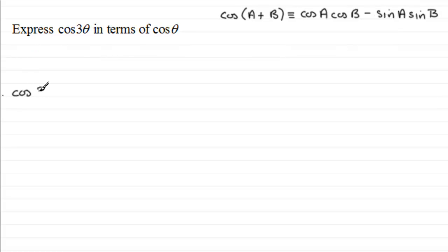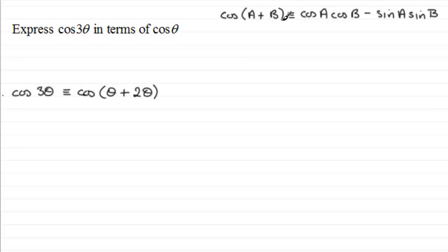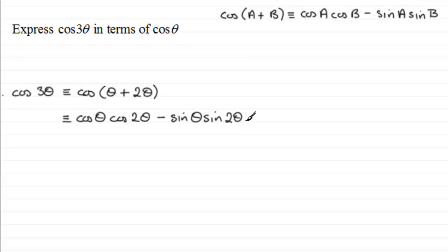To start, we write cos(3θ) as cos(θ + 2θ). Here θ corresponds to A and 2θ corresponds to B in the addition formula. Expanding this gives us cos(θ)·cos(2θ) minus sin(θ)·sin(2θ).